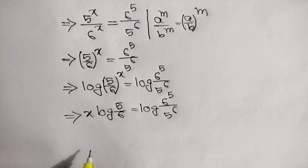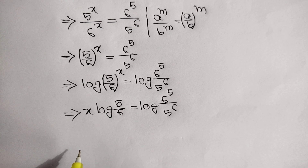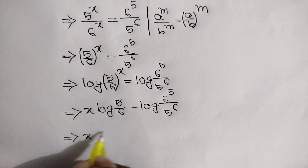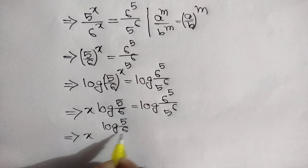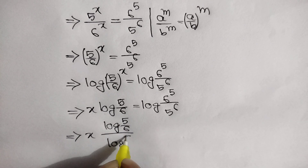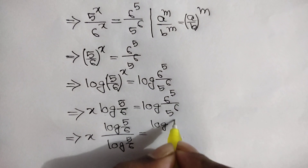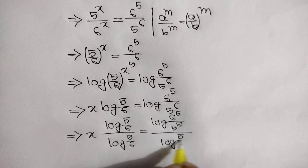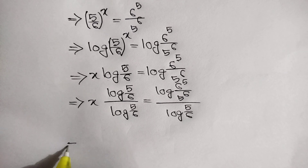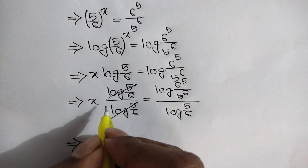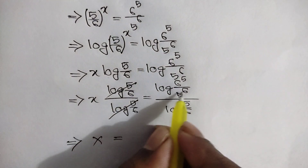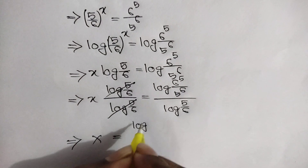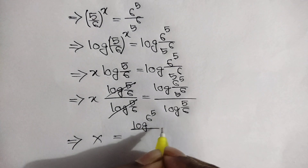Now divide both sides by log 5 over 6. We can write: x times log 5 over 6 divided by log 5 over 6 is equal to log of 6 to the power 5 over 5 to the power 6, divided by log 5 over 6. This cancels out, so x is equal to log 6 to the power 5 over 5 to the power 6, divided by log 5 over 6.